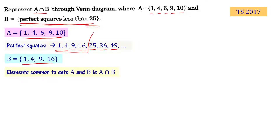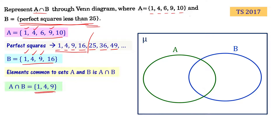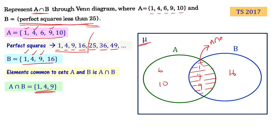So A intersection B is the set of elements common to A and B. A = {1, 4, 6, 9, 10} and B = {1, 4, 9, 16}, so A intersection B = {1, 4, 9}. Now we represent this using a Venn diagram: μ is the universal set shown as a rectangle, A is the green circle, and B is the blue circle. The intersection region contains {1, 4, 9} and we shade only that portion. The remaining element in A only is {6, 10} and in B only is {16}.